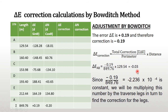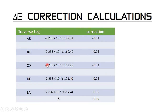So for AB, we say minus 2.236 times 10 to the power minus 4, times 129.54, which gives us 0.03. This constant multiplies each different distance in the traversy leg. These are the correction values we have worked out. However, when you add these corrections, they may not exactly equal minus 0.19, since the values have been rounded to two decimal places.